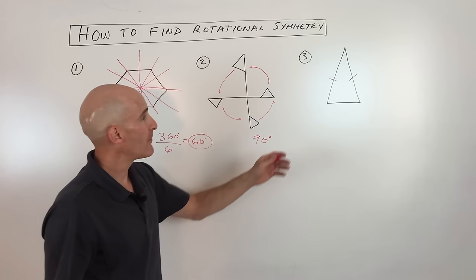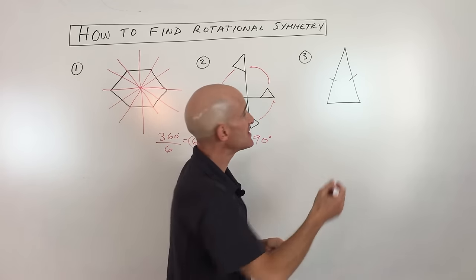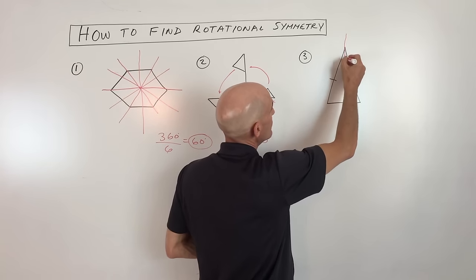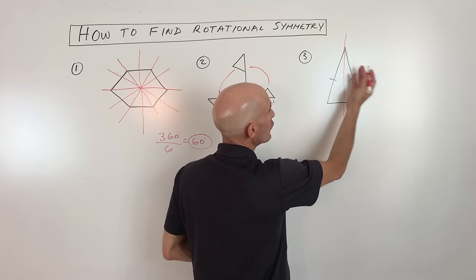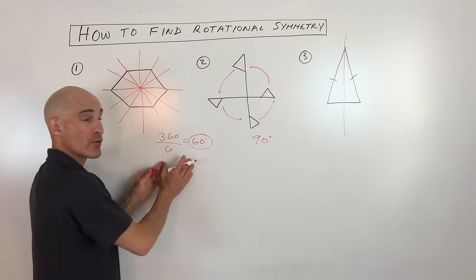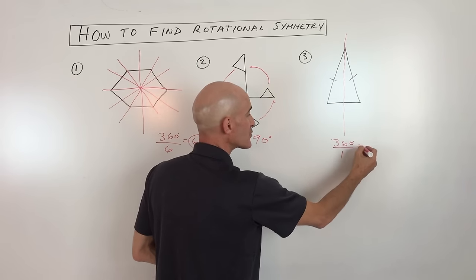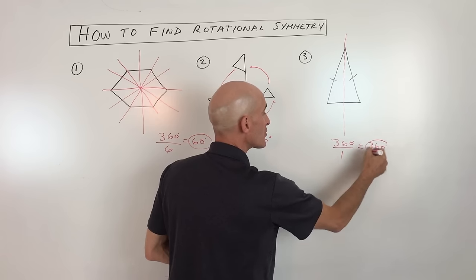Third example. Here I've drawn a triangle for us, an isosceles triangle, and you can see that there's a line of symmetry that goes right down the middle like so. Meaning if we fold it over this line, it's going to match to itself. Well, if we go back to example number one where we took 360 degrees and we divided it by the number of lines of symmetry, you can see we're just getting 360 degrees.